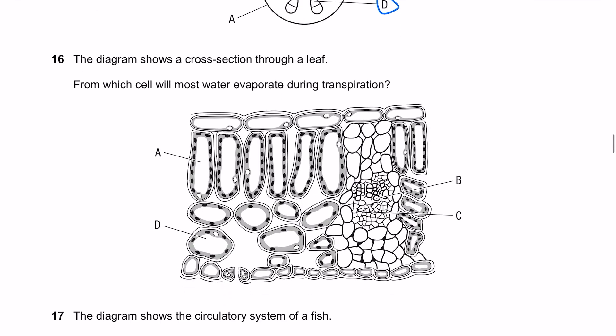The diagram shows a cross section through a leaf. From which cell will most water evaporate during transpiration? The answer here is the spongy mesophyll, it's D.